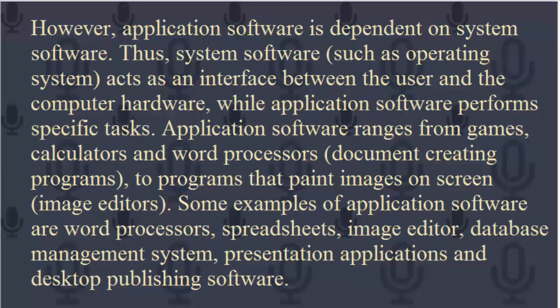However, application software is dependent on system software. Thus, system software such as an operating system acts as an interface between the user and the computer hardware, while application software performs specific tasks. Application software ranges from games, calculators, and word processors, document creating programs, to programs that paint images on screen such as image editors. Some examples of application software are word processors, spreadsheets, image editor, database management system, presentation applications, and desktop publishing software.